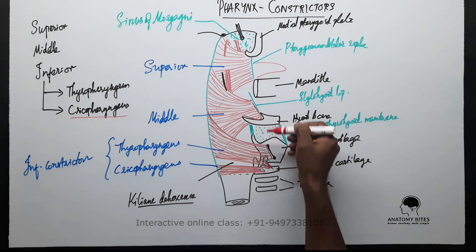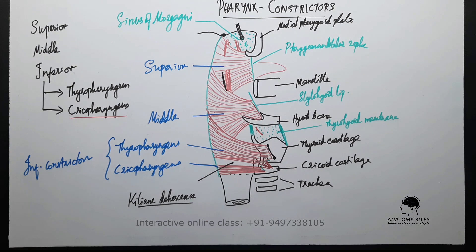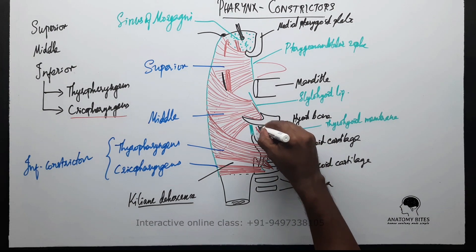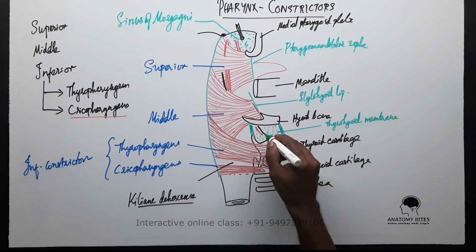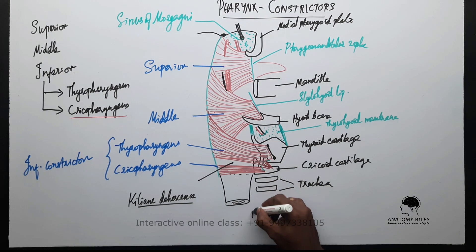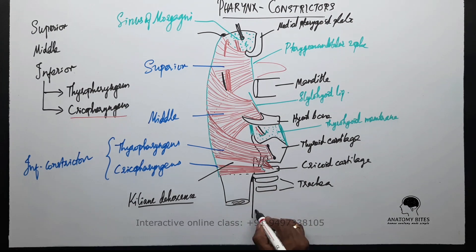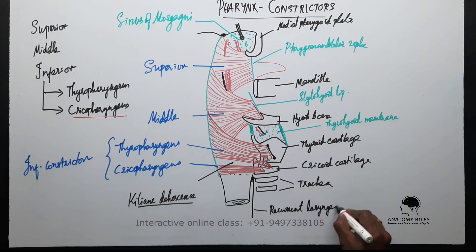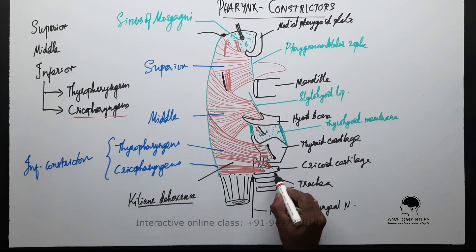Piercing the thyrohyoid membrane, one artery named the superior laryngeal artery and one nerve named the internal laryngeal nerve both pierce the membrane to enter inside the larynx. There is also the nerve ascending upwards between the trachea and esophagus, named the recurrent laryngeal nerve.